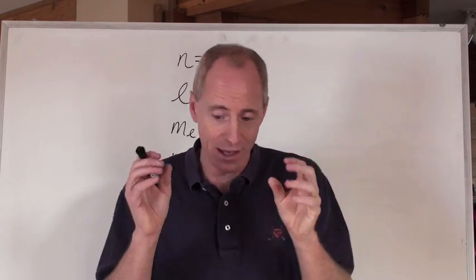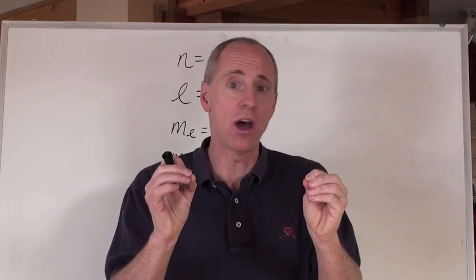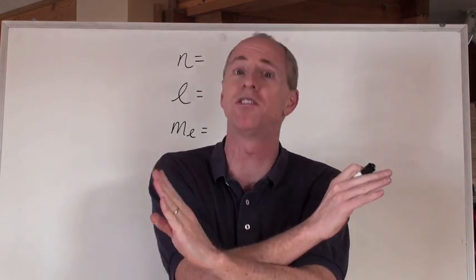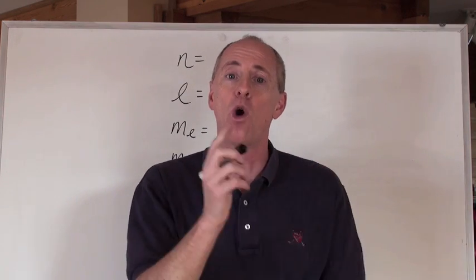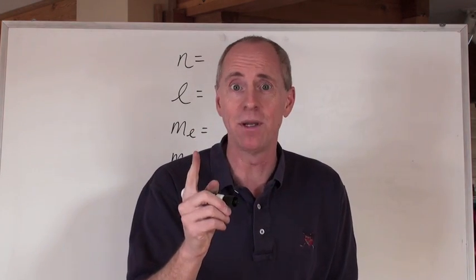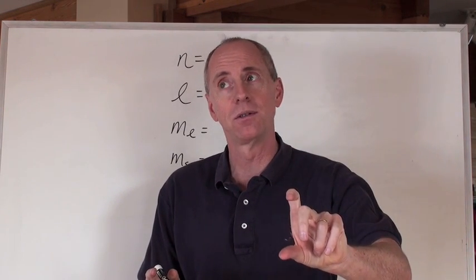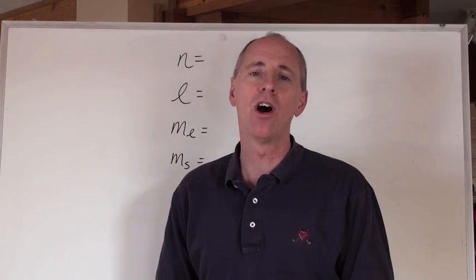Electrons in the same atom cannot have the same set of quantum numbers. That's called the Pauli Exclusion Principle, which means that every electron in an atom gets its own set of four numbers that describes its address. So what do we call those numbers?